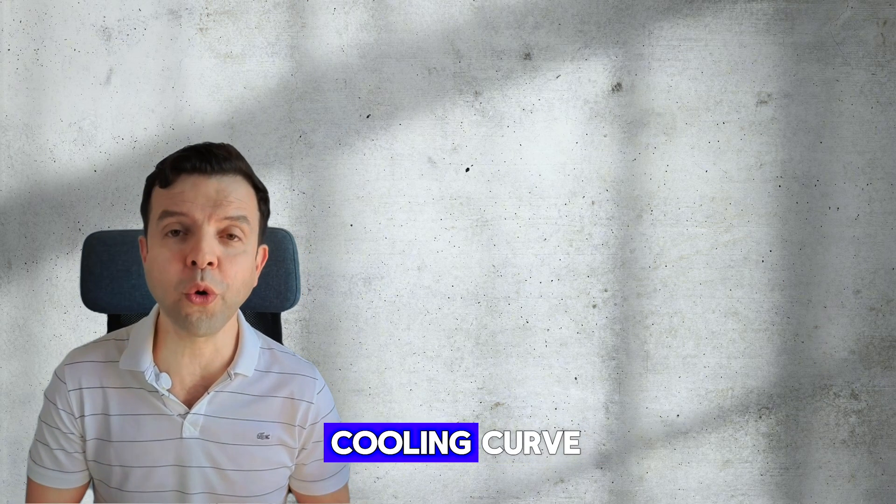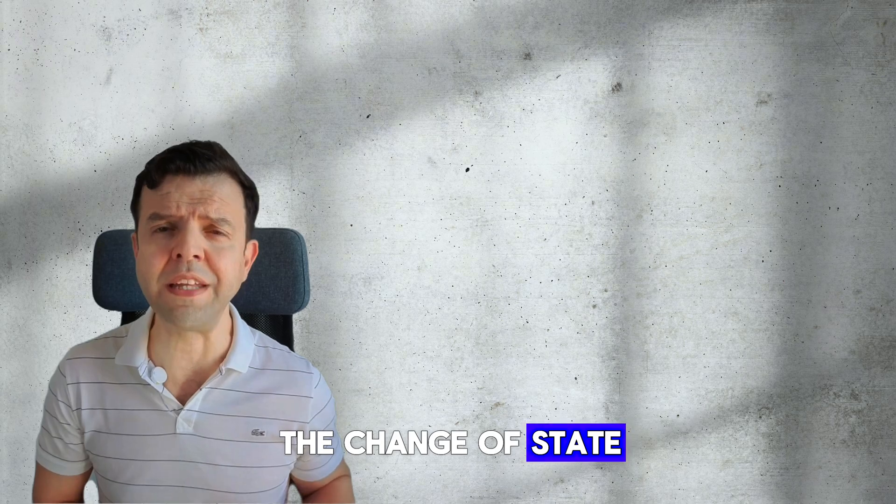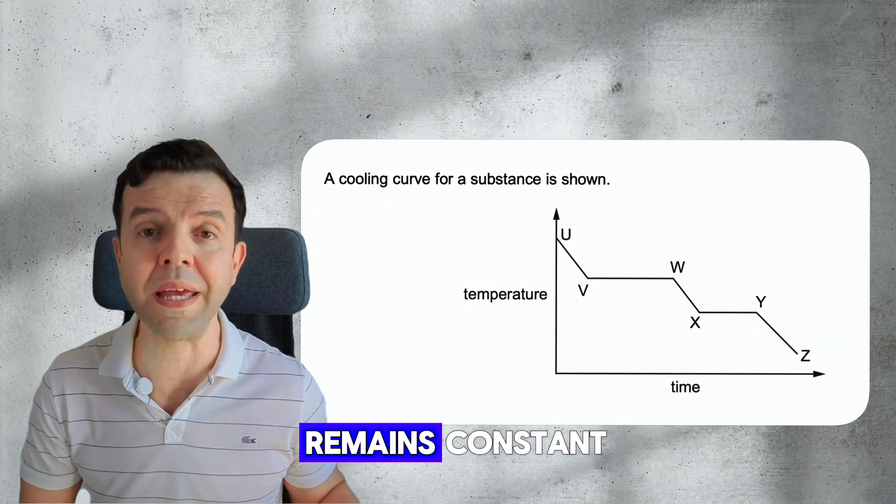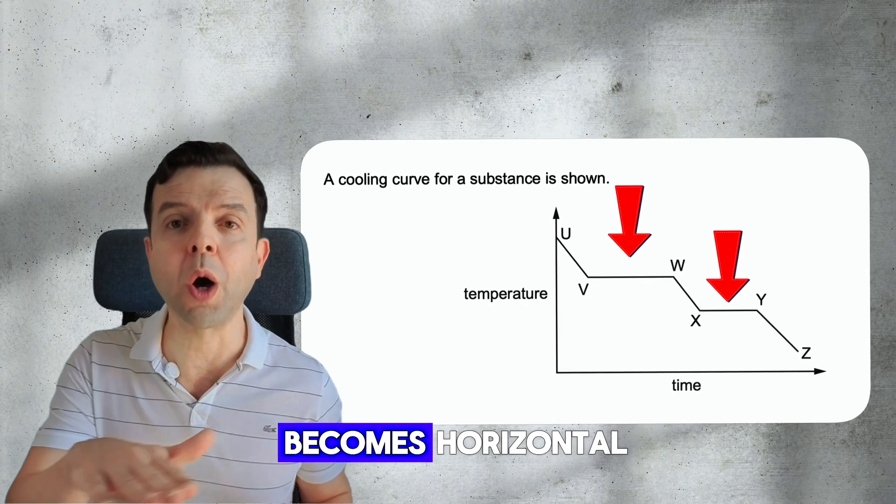In a heating or cooling curve, the change of state, such as melting or boiling, occurs when the temperature remains constant. That's when the curve becomes horizontal.